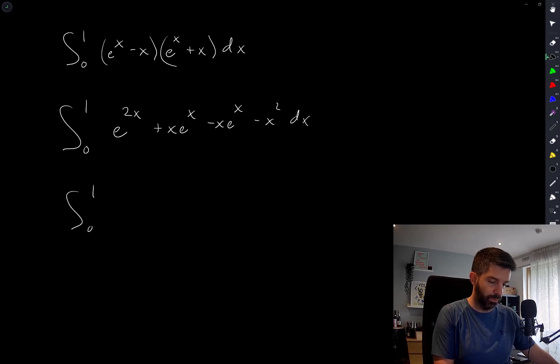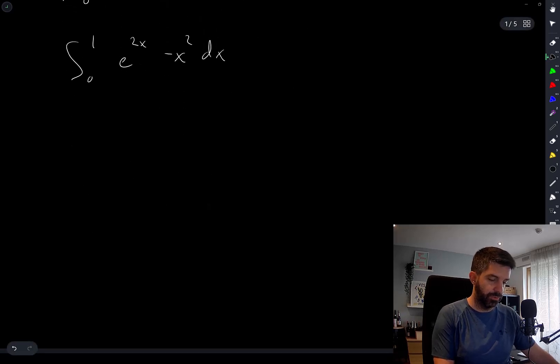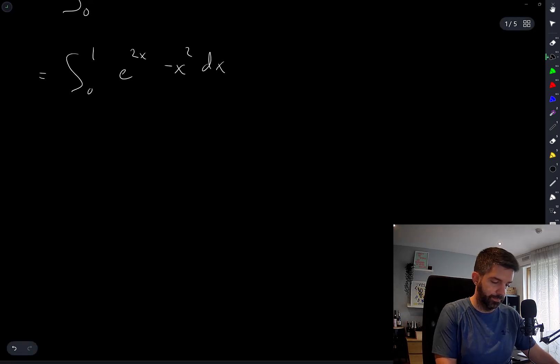So I have the integral from 0 to 1 of e^(2x) - x^2 dx, which should be pretty straightforward. This has an antiderivative of e^(2x)/2 - x^3/3.